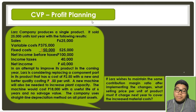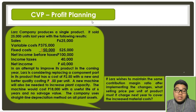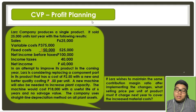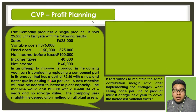In an attempt to improve its product in the coming year, Large is considering replacing a component part that costs 2.5 with a new, better quality part costing 4.5. A new machine will also be needed to increase plant capacity, costing 18,000 with a useful life of six years and no salvage value. The company uses the straight-line depreciation method. If Large wishes to maintain the same contribution margin ratio after implementing these changes, what selling price per unit must it charge next year to cover the increased material cost?